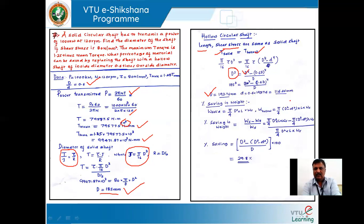The inside diameter of the hollow shaft is 0.6 × 193.76 = 116.25 mm. To find the saving in material, the weight ratio of solid to hollow shaft is taken using the cross-sectional areas. The percentage saving in material = (Weight of solid shaft − Weight of hollow shaft) / Weight of solid shaft × 100 = 29.8%. This is the amount of material saved by replacing the solid shaft with the hollow shaft.